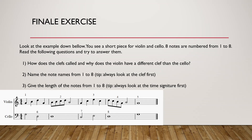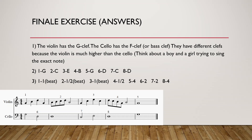The third and final question: give the length of the notes from one to eight. Always look at the time signature first. We are in 4/4, which means the quarter note is one beat and there are four beats in one bar. The first note is a quarter note — one beat. The second note has a flag — half a beat. The third note is a quarter note — one beat. The fourth note is half a beat. The fifth note is a whole note — four beats. The sixth note is a half note — two beats. The seventh note is two beats, and the eighth note is four beats again. And here are all the answers given.